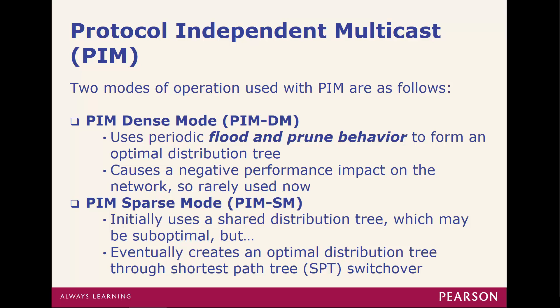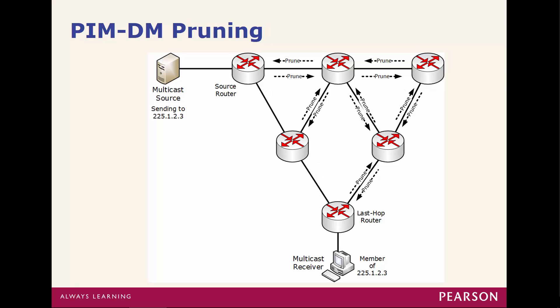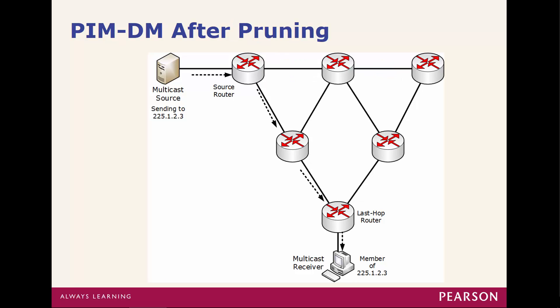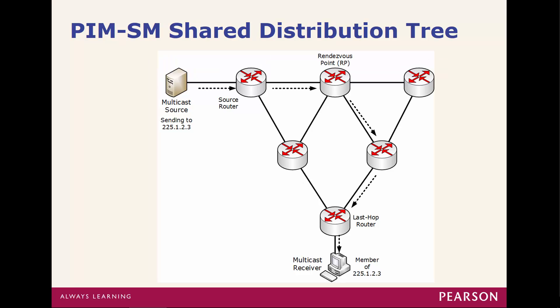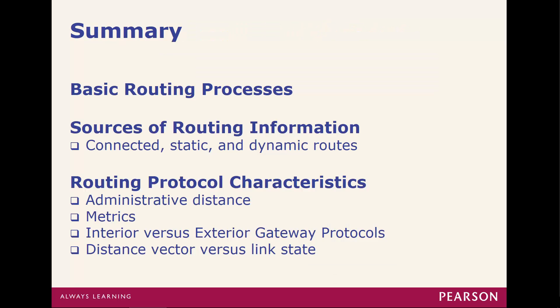In dense mode flooding, it will flood everywhere, then pruning starts removing the different repetitive links, and after pruning we have one path. As opposed to shared distribution, which could take multiple paths — after SPT switchover it could have a dedicated path. That's it for this chapter. Thank you.